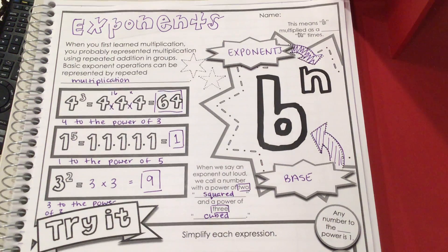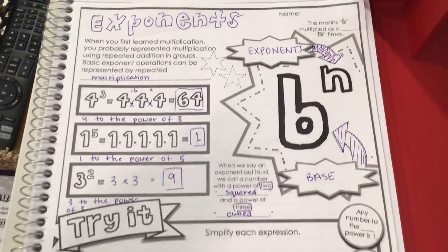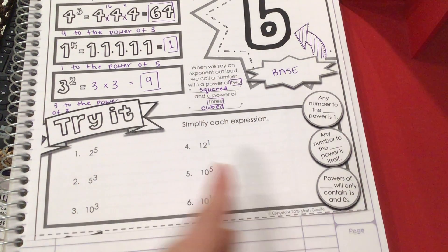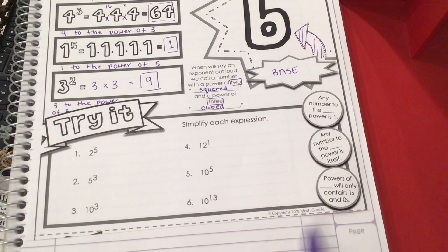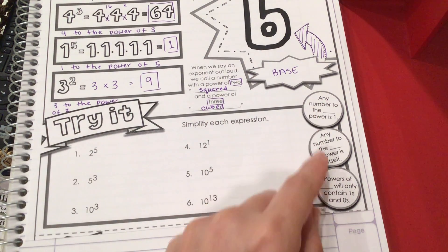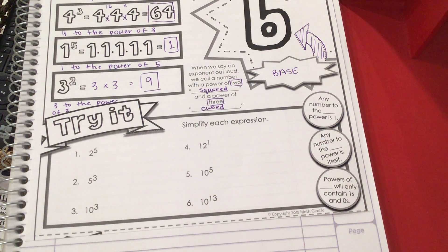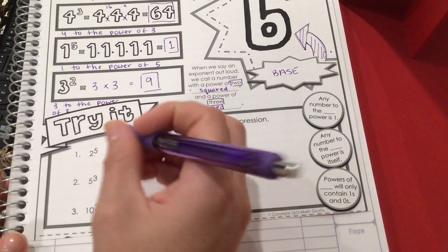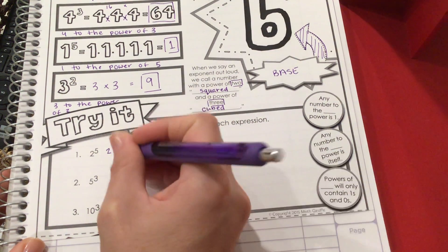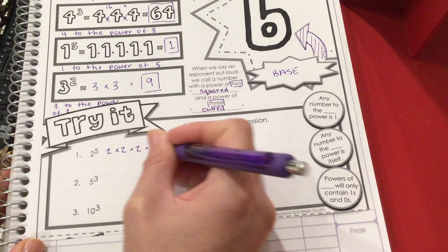The only part we have left is this last section that says Try It. Remember, you can cut off the section that involves negative numbers. We'll get to those eventually, but for now we're sticking with positive numbers. We're going to go through these examples. For 2 to the power of 5, we're going to write the number 2 five times: 1, 2, 3, 4, 5.